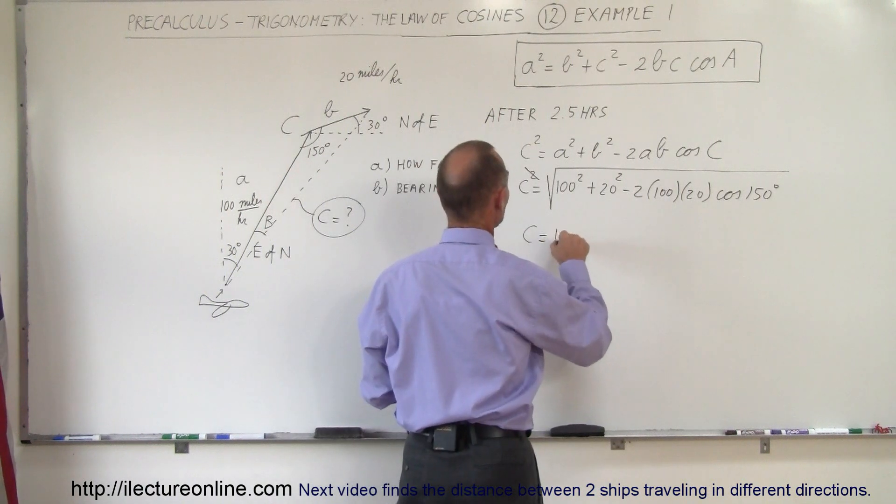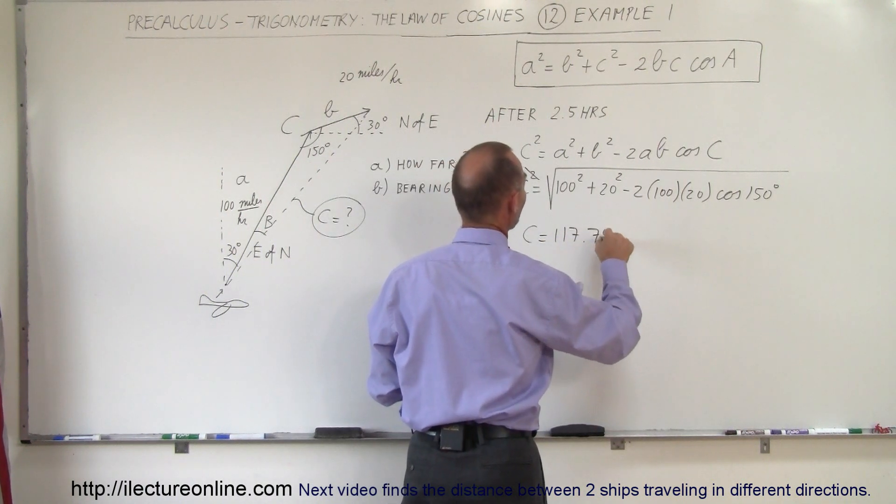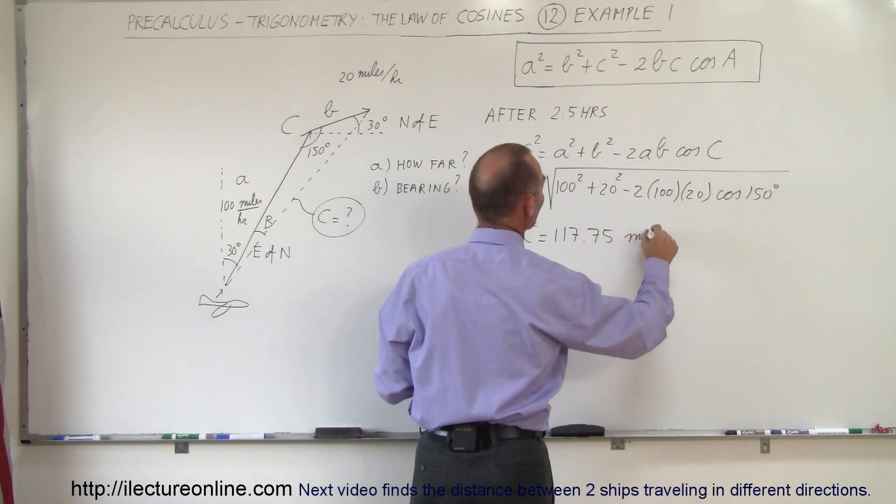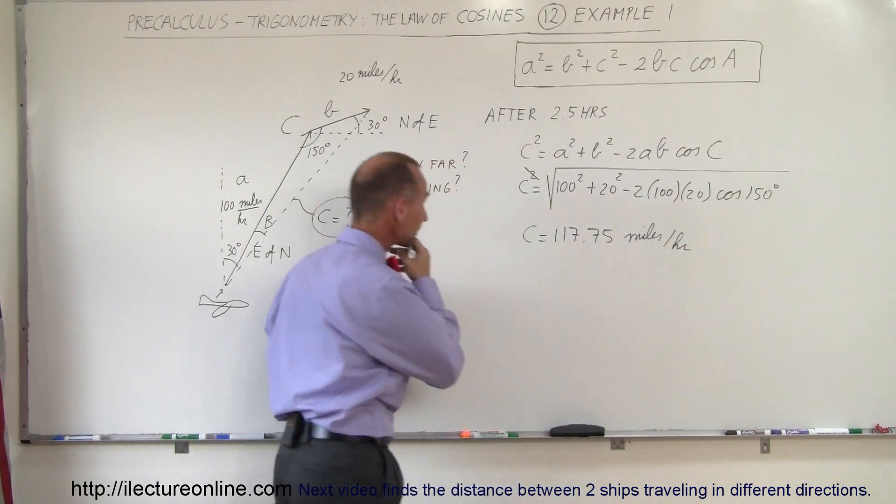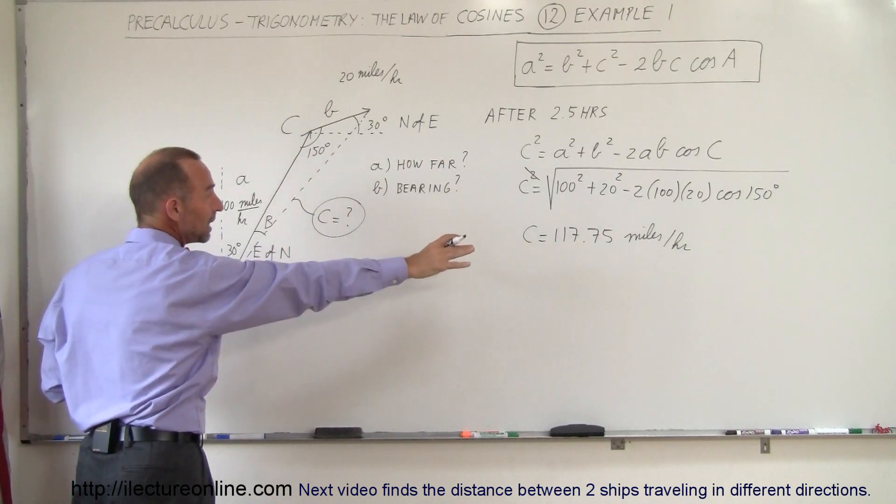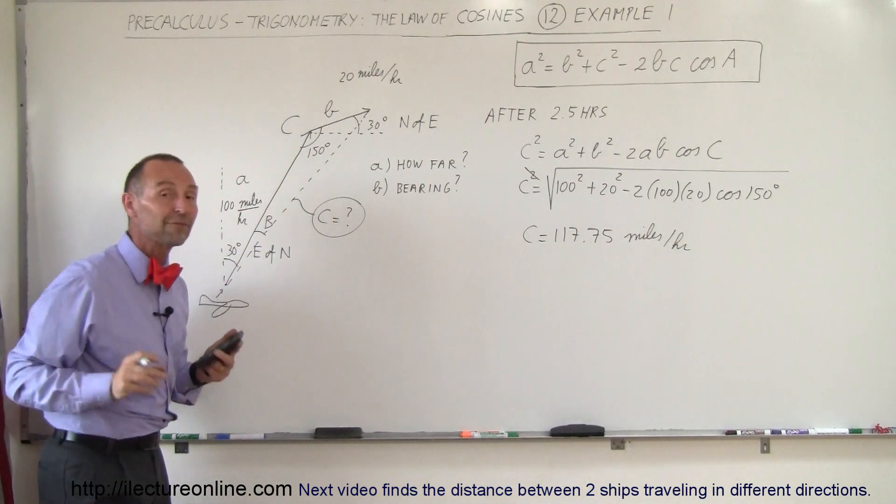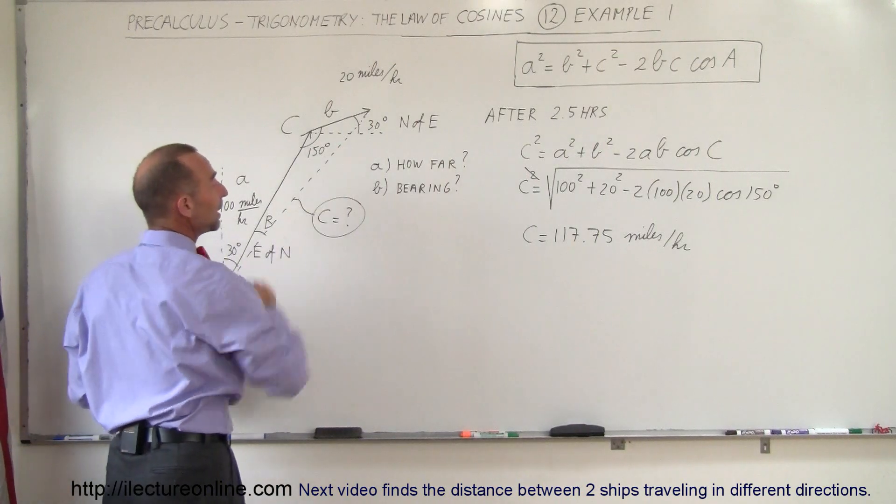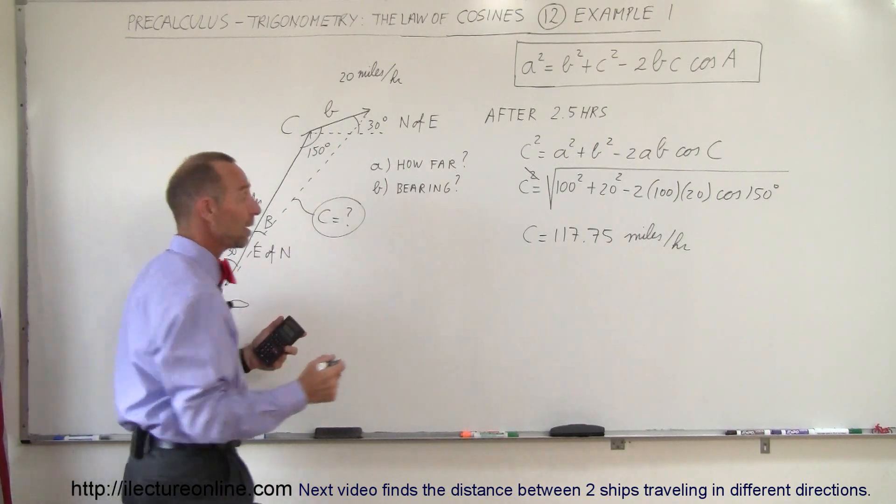So C is equal to 117.75, and that would then be, of course, miles per hour. So if we fly for one hour, the speed would be 117.75 miles per hour. After one hour, the distance would be that many miles.